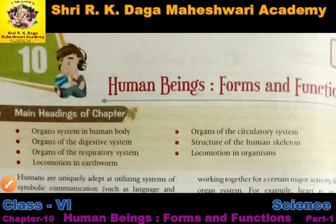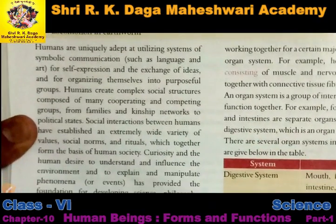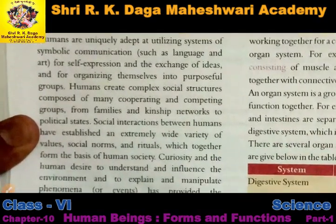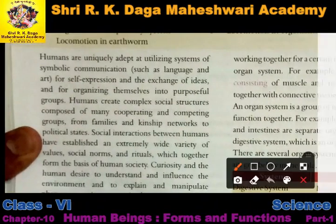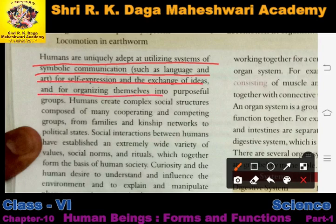First of all let us go through the brief introduction of the chapter. Humans are uniquely adapted at utilizing systems of symbolic communication such as language and art for self-expression and the exchange of ideas, and for organizing themselves into purposeful groups.